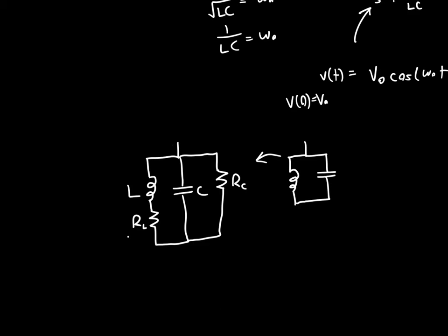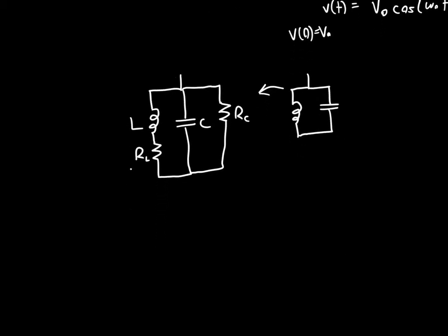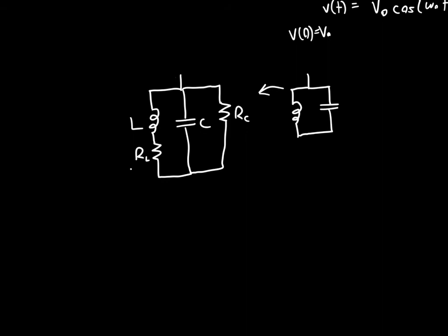If it didn't, then we wouldn't have this parallel resistance. We've got some series resistance for our inductor. Now generally capacitors are higher quality in IC manufacturing than resistors, so this Rᴄ is generally neglected. We're left with this circuit: we've got a series inductor with a series resistor and a parallel capacitor.